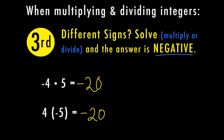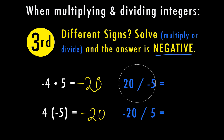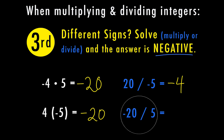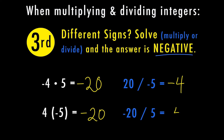Now let's look at when we're dividing with different signs. Here I have 20 divided by negative 5 — these have different signs, one's positive and one's negative. 20 divided by 5 is 4, and a positive divided by a negative is a negative. Same situation here: negative 20 divided by 5. 20 divided by 5 is 4, and a negative divided by a positive is a negative.